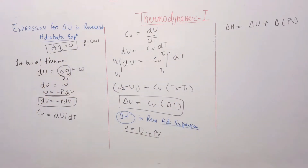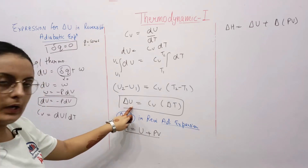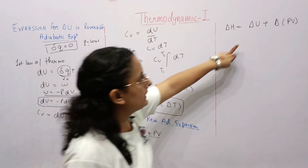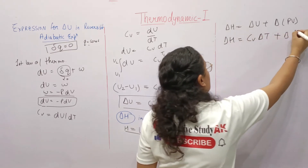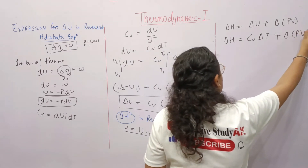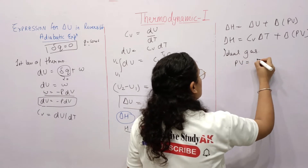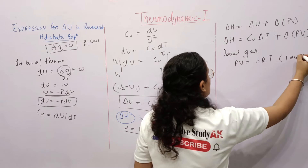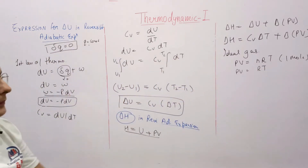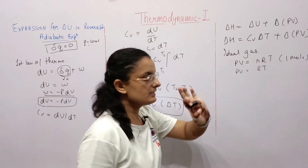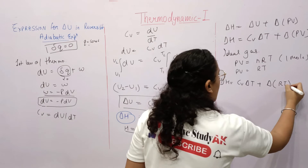Taking the differential: delta H = cv·ΔT + Δ(PV). For an ideal gas, PV = nRT. For one mole: PV = RT. Substituting this value in place of PV: delta H = cv·ΔT + Δ(RT).